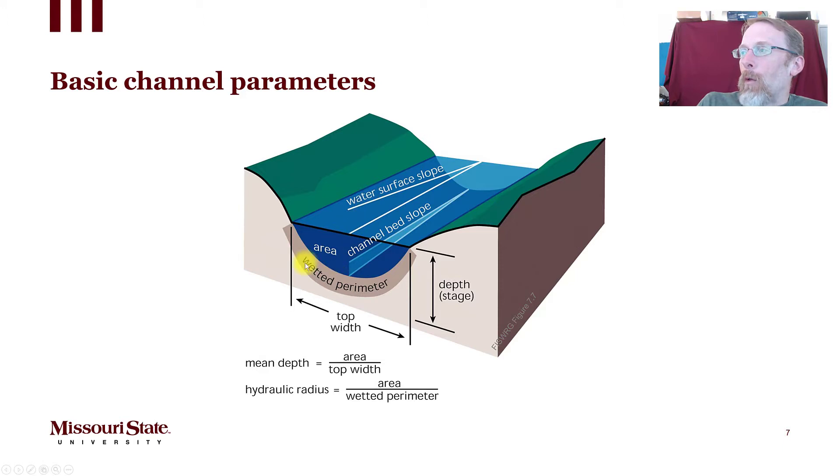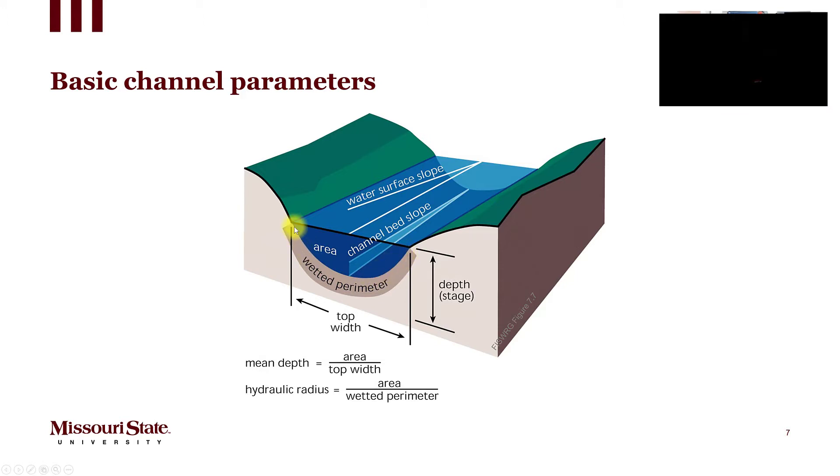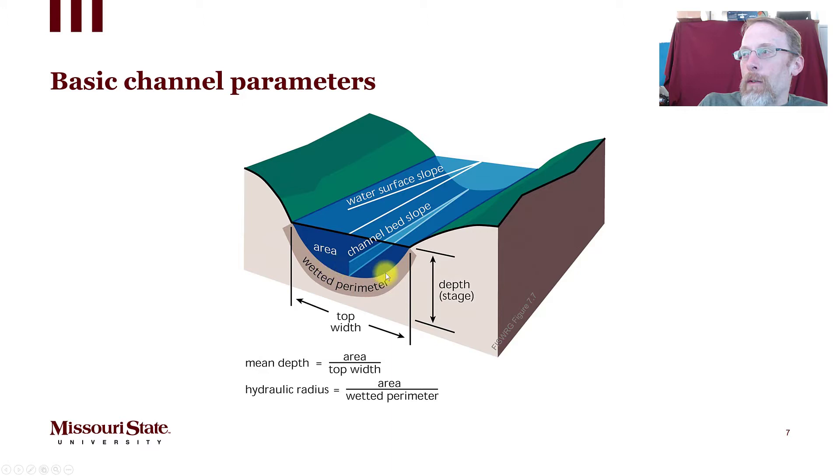First of all, we've got the wetted perimeter of the stream. Kind of what it sounds like, this is where the water and the stream bed interface. This wetted perimeter is right here on the stream channels, the bottom of the stream.